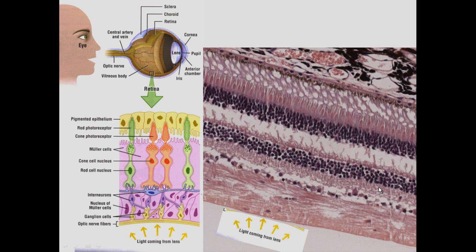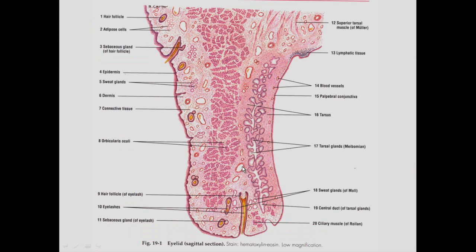The eye is very important in visualizing the world. We can see the different components: the cornea, the pupil which is the opening of the iris, the lens, the retina, and the vitreous body. The choroid and sclera are also visible. The retina itself has different cell layers — pigmented epithelial cells, rods and cones, bipolar cells, and ganglion cells that interact with the brain.